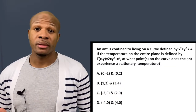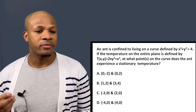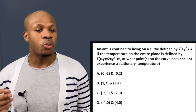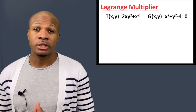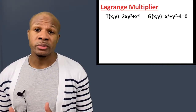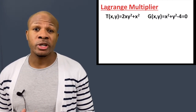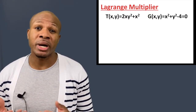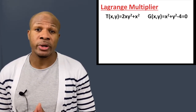Problem number two: an ant is confined to living on a curve defined by x² + y² = 4. The temperature on the entire plane is defined by T(x, y) = 2xy² + x². At what points on the curve does the ant experience stationary temperature? Since we've already covered the concept, we know what to do — let's solve it.